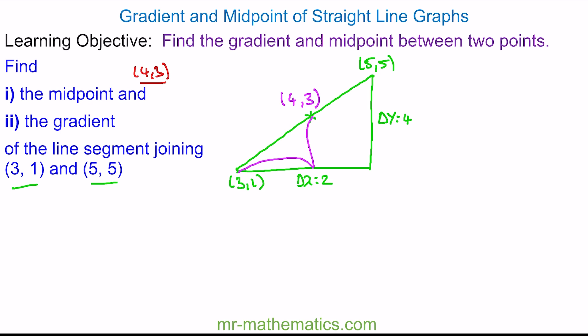Now to work out the gradient, this is a measure of the change in y divided by the change in x. We know the change in y is 4 and the change in x is 2, so 4 divided by 2 gives us a gradient of 2.